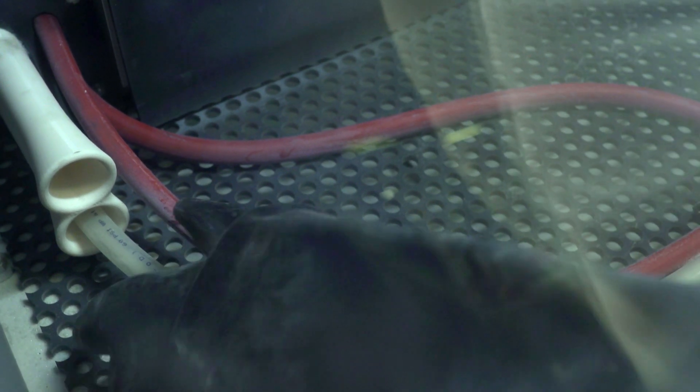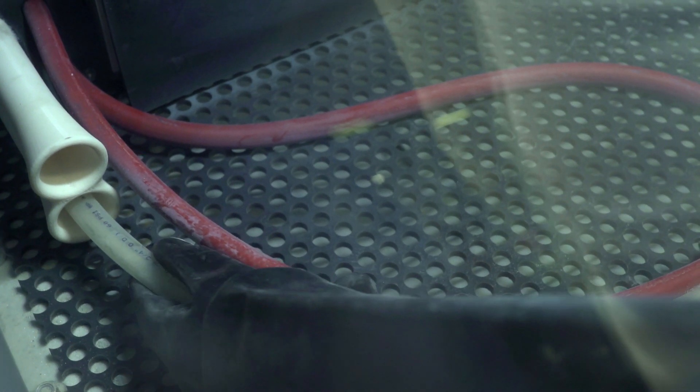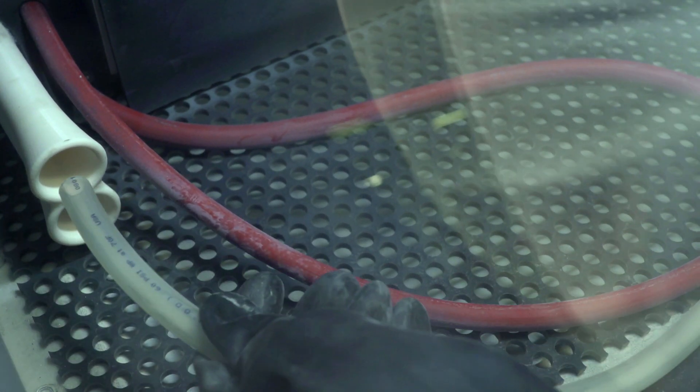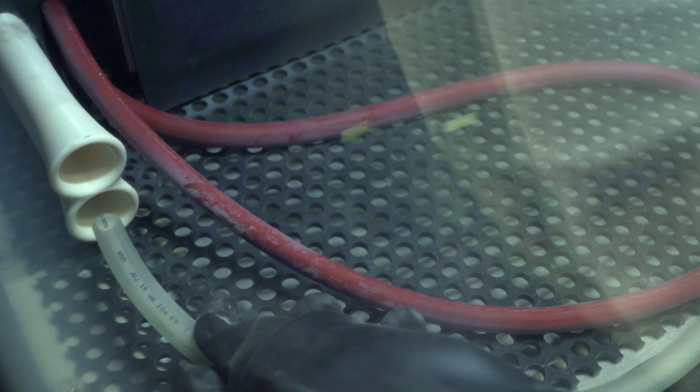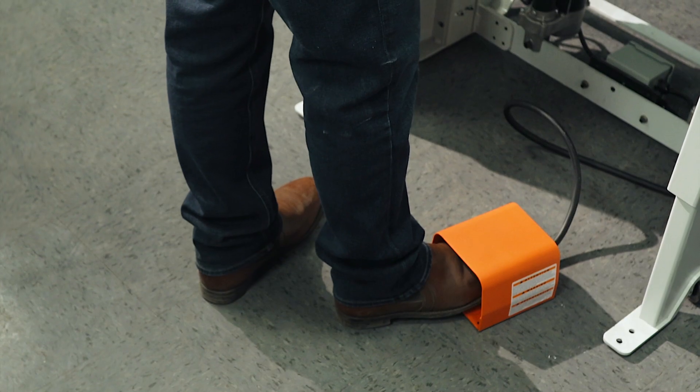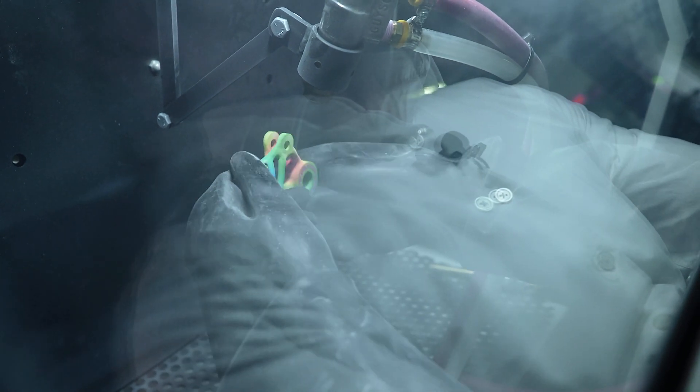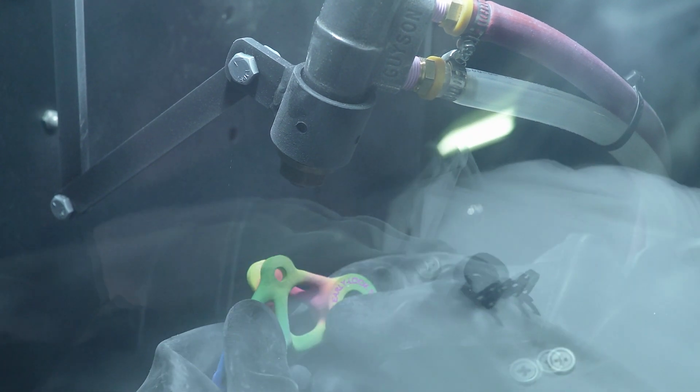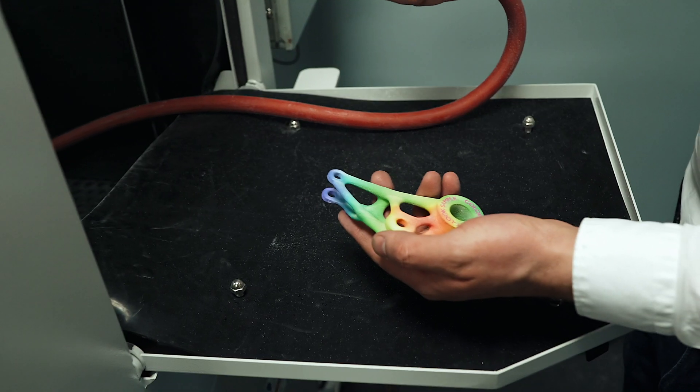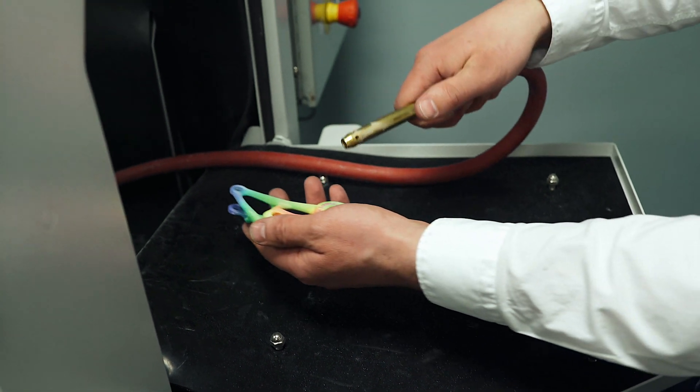This system has a media source selector. The bottom position is for continuous use media. The top position is for single use media. It's as easy as pulling the hose out of one and sliding it into the other. When you're ready to blast, press the foot pedal and hold the part in front of the gun. There's an air blow off nozzle which allows you to blow off any excessive media on the part.